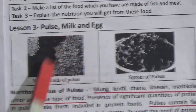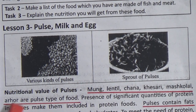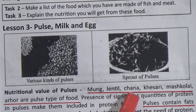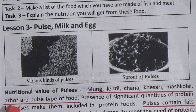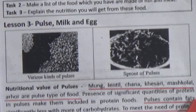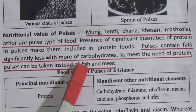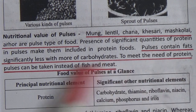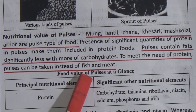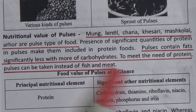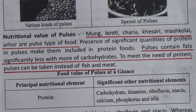Lesson 3: pulse, milk, and egg. Various kinds of pulses include mung, lentil, chona, khesari, and muskoli. Pulses contain significantly less fat but more carbohydrates. To meet the need of protein, pulses can be taken instead of fish and meat. Pulses are very good sources of thiamine, riboflavin, and niacin.